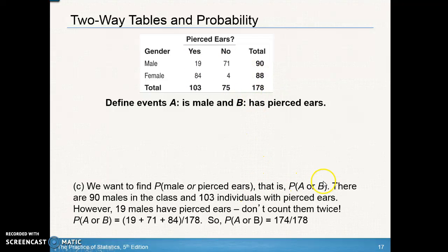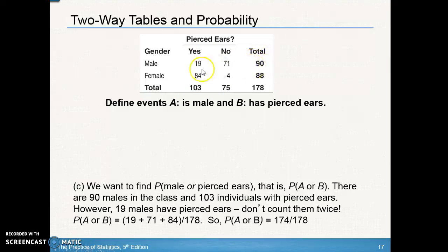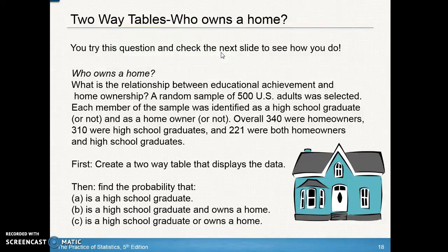Be careful — you can't just add the pierced ears column total (103) and the male row total (90), because the 19 who are both male and pierced ears would be counted twice. That would be incorrect. You can only count it once, so just add the three individual values: 19 plus 84 plus 71. Make sure to create a two-way table with totals and labels before answering the questions.